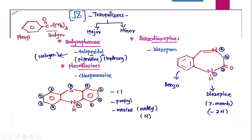In Tranquilizers, as we have seen in earlier videos, these are divided into major and minor Tranquilizers. Phenothiazine is the class which comes under major Tranquilizers, and the example we are going to see is Chlorpromazine. The other example was from the class Butyrophenone — the drug Haloperidol. For minor Tranquilizers, the class is Benzodiazepine and the drug is Diazepam.